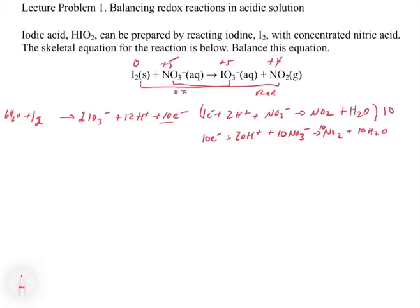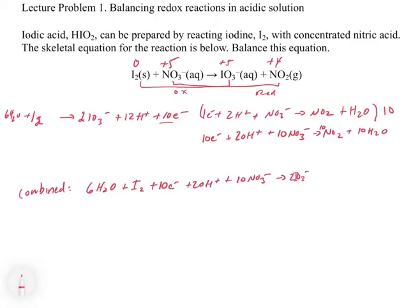We add the two half reactions together, writing reactants first and products second. The combined equation is: 6 H2O + I2 + 10 electrons + 20 H+ + 10 NO3 minus gives 2 IO3 minus + 12 H+ + 10 electrons + 10 NO2 + 10 H2O.